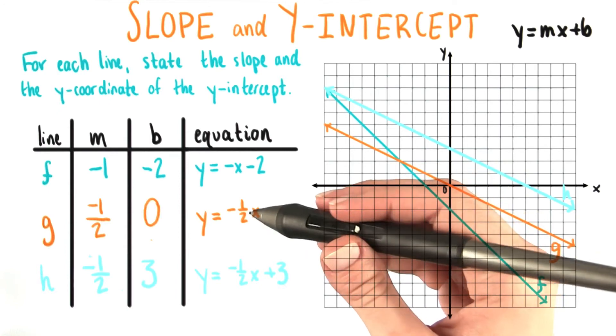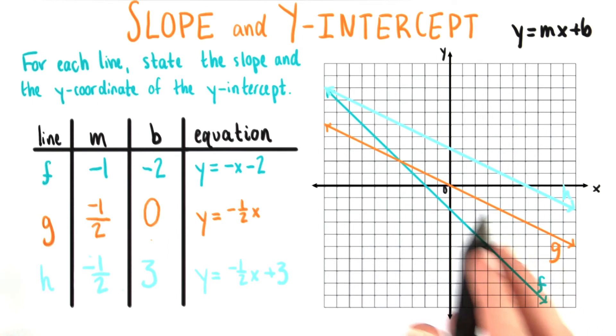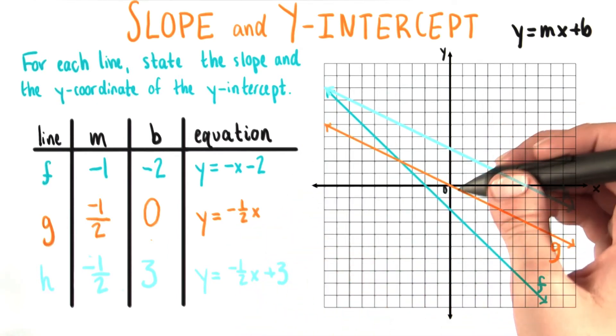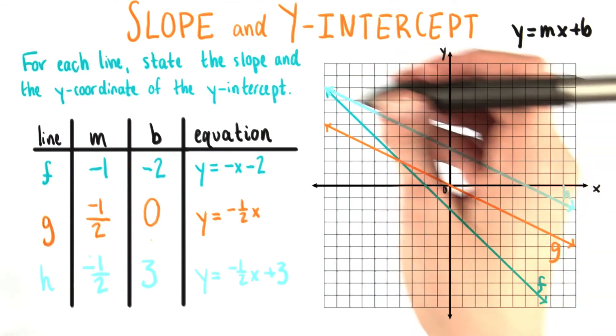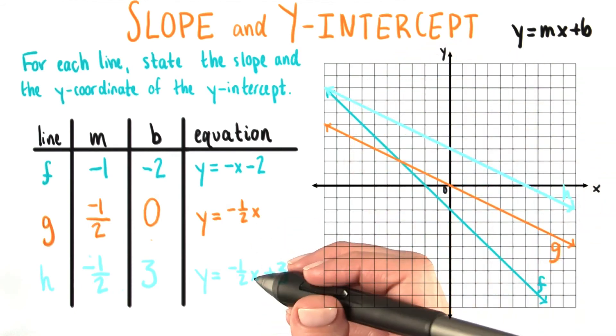As we saw before, lines g and h have the same slope, negative 1 half. And we can see on the graph that they look parallel. They don't have the same y intercept, but they do point in the same direction. Parallel, as we learned very early in the lesson, just means same slope.